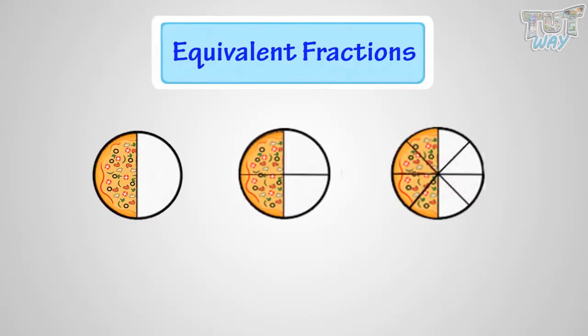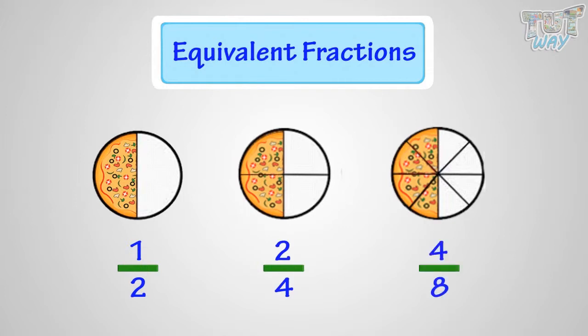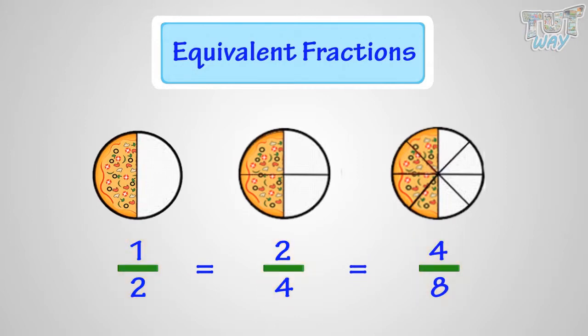Here are three fractions. This is one by two pizza. This is two by four pizza. This is four by eight pizza. These are all the same parts of a whole pizza, or they are all equal. That is, one by two equals two by four equals four by eight, as they are all representing the same portion of this pizza. So they are equivalent fractions.